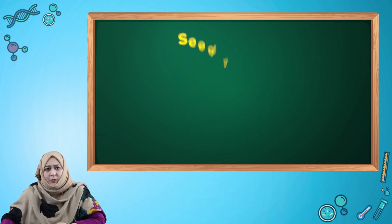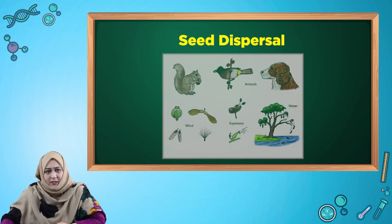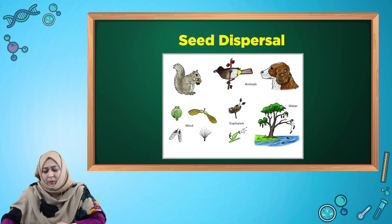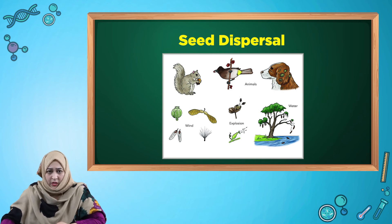Now let's talk about seed dispersal. What is seed dispersal? Seed dispersal is when the seed is moved away from the parent plant. Seed dispersal takes place by wind, by animals, by explosion, or by water.